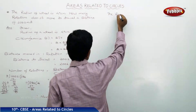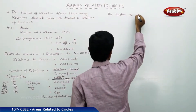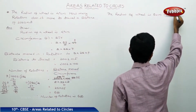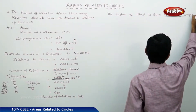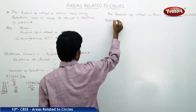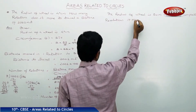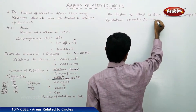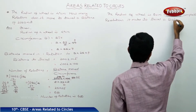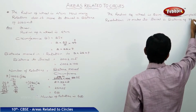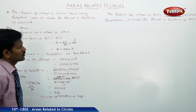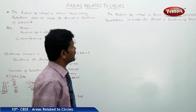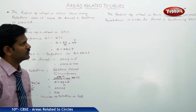The radius of a wheel is 84 centimeters. How many complete revolutions does it make to travel a distance of 792 meters?